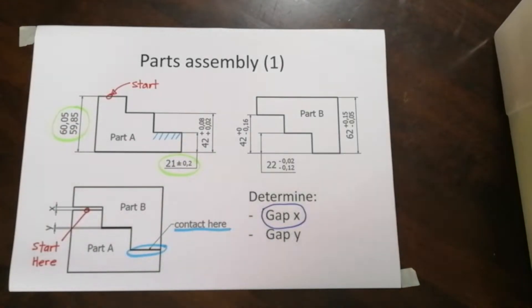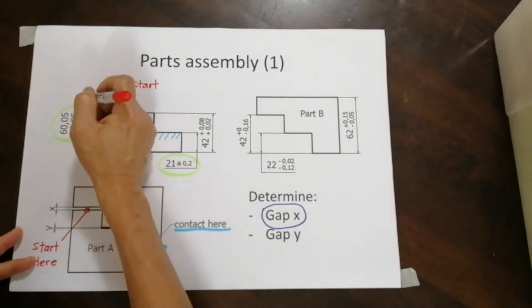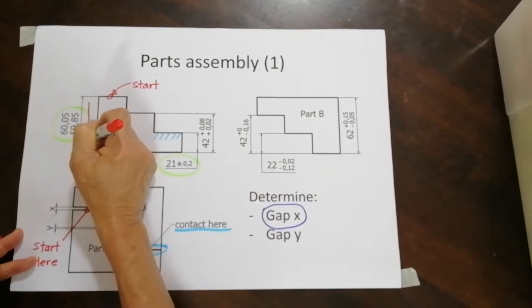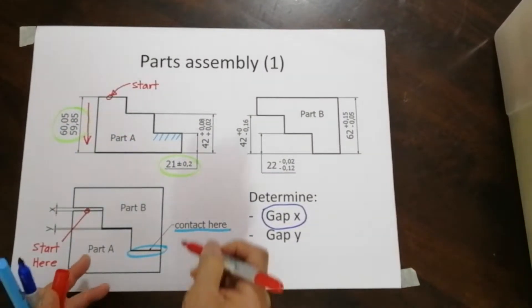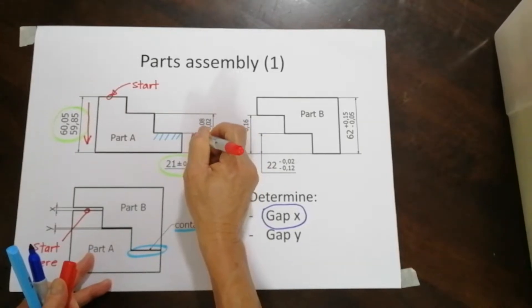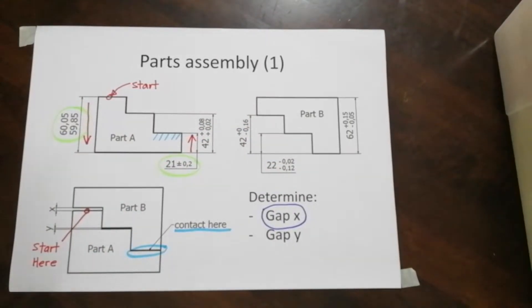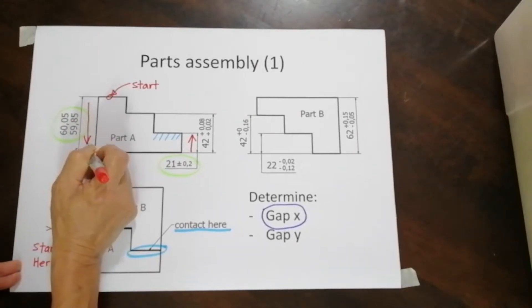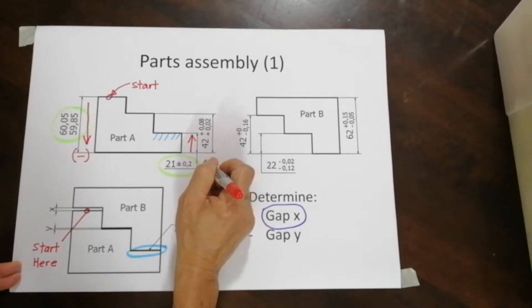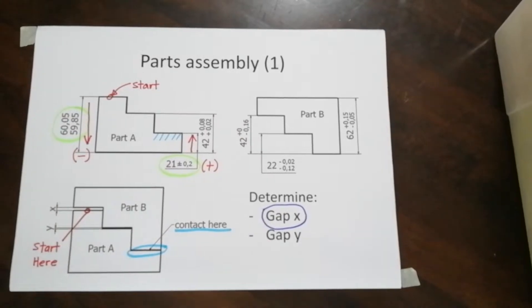Now, for the first dimension here, it is going down. And then for this dimension, it is going up. When it goes down, it is negative. When it goes up, it is positive.